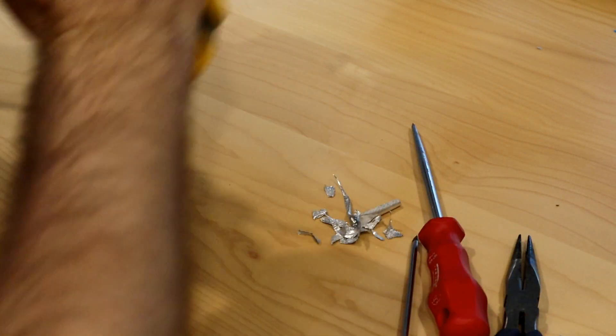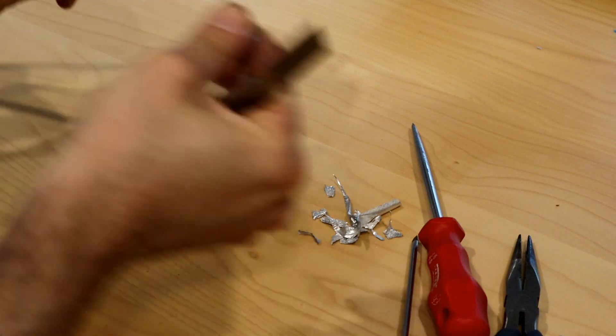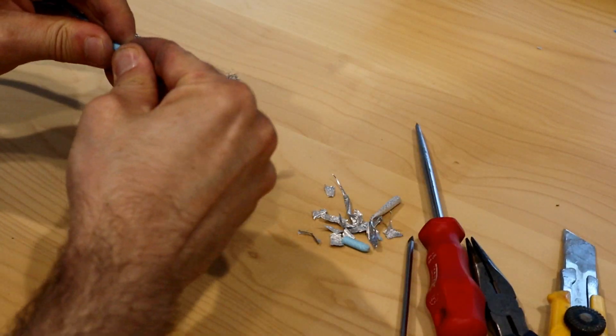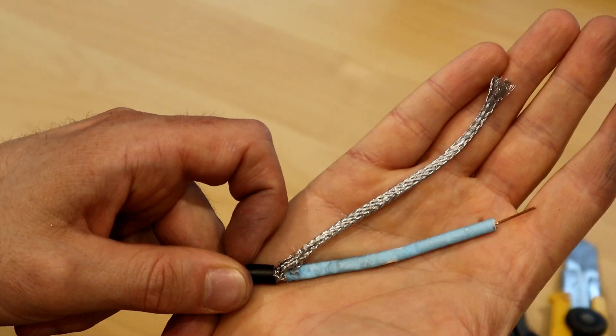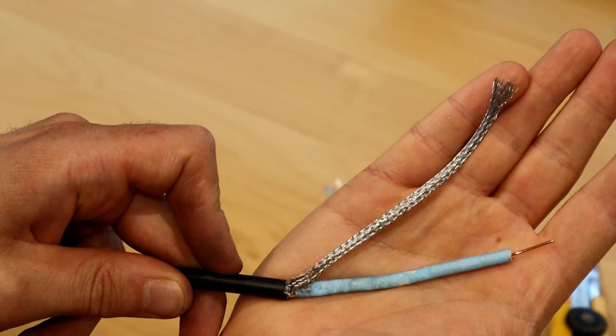The last step is to remove a short section of the insulation of the core to allow for crimping or soldering a cable lug on. Or just to make the bare wire accessible for a screw terminal block.